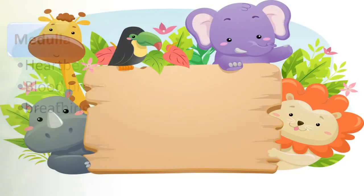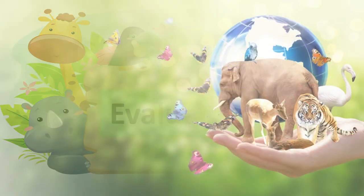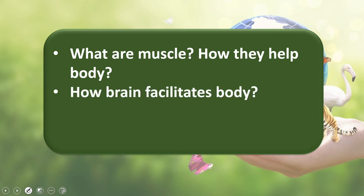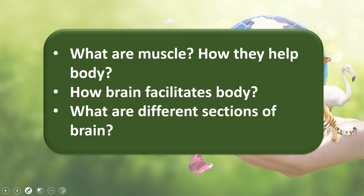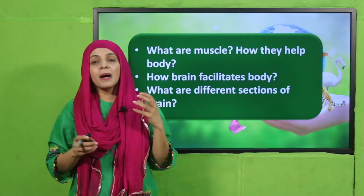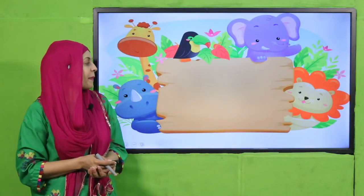Evaluation questions: What are muscles? Muscles are elongated fibers that help the body in movement. How does the brain facilitate the body? The brain is the controlling part of the body and controls all functions through its different parts. What are the different sections of the brain? Cerebellum, cerebrum, midbrain, optic lobe, and medulla.